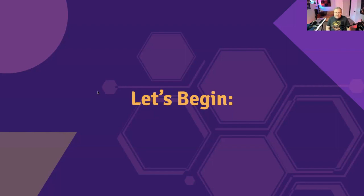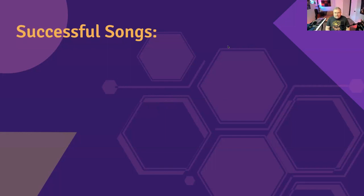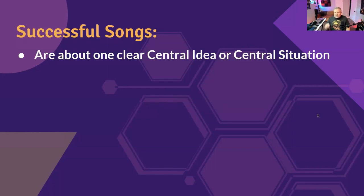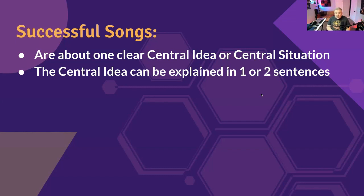We're going to talk about how to be specific. Successful songs are usually about one clear central idea or one central situation — going deep instead of going wide. Are you trying to say too much? A song's central idea can usually be explained in about one or two sentences. If it takes you a whole paragraph or page to explain what your song is about, you probably have more than one song in the works.